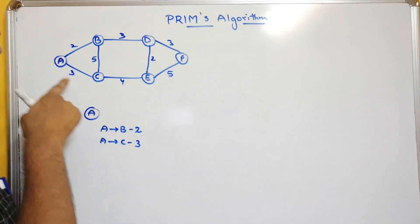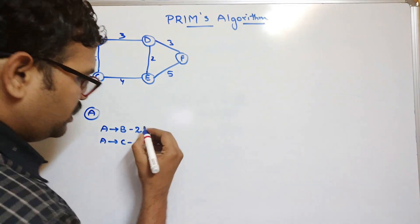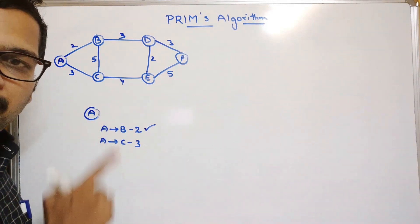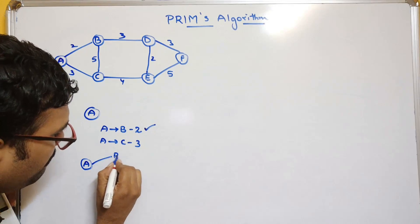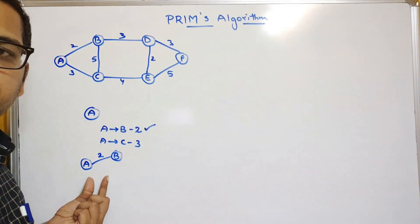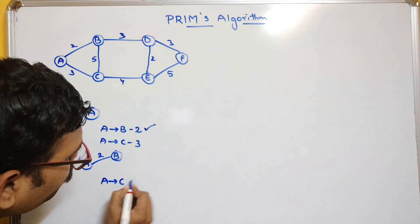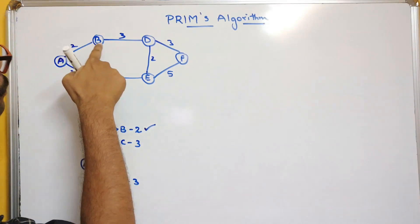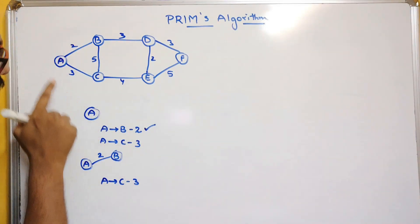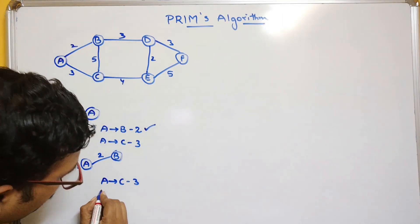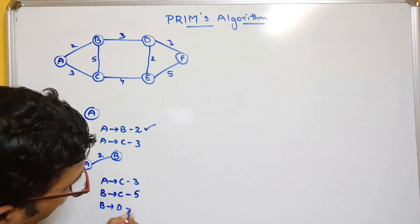A has two edges: A to B with cost 2 and A to C with cost 3. Select the least weighted edge, which is A to B with cost 2. Add vertex B to the spanning tree — the tree is now A-B with cost 2. The new vertex is B. Remaining edge is A to C with cost 3. From B, consider edges to new vertices: B to A is already covered. So we consider B to C with cost 5 and B to D with cost 3. Among these, two edges have cost 3, so select B to D.